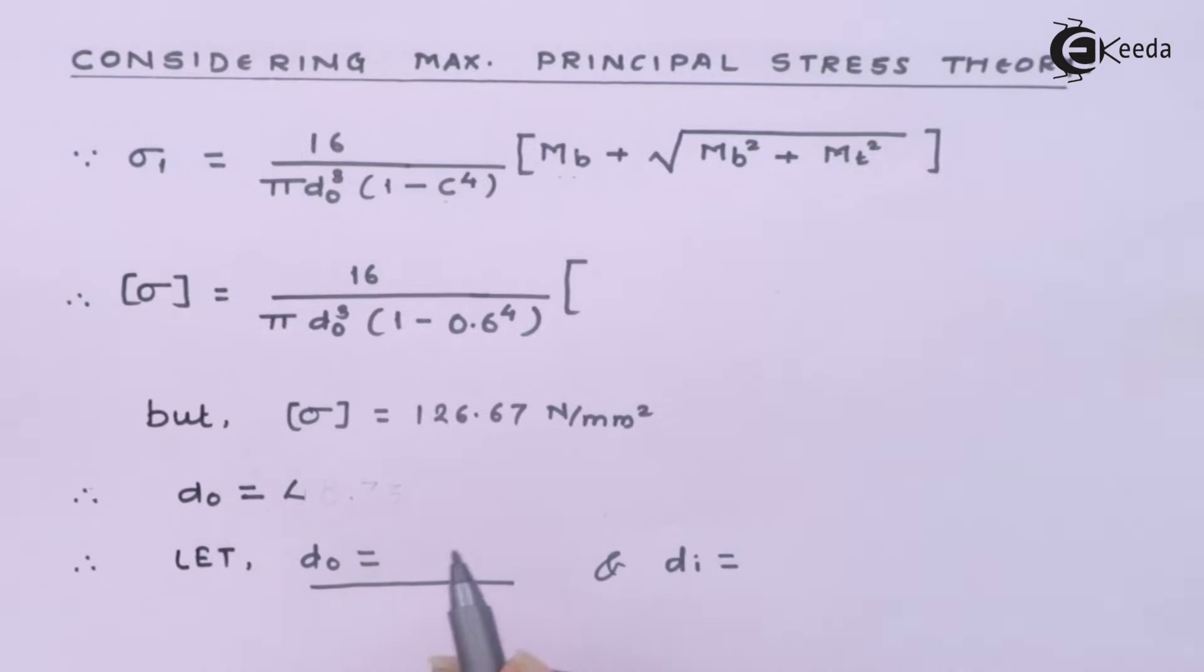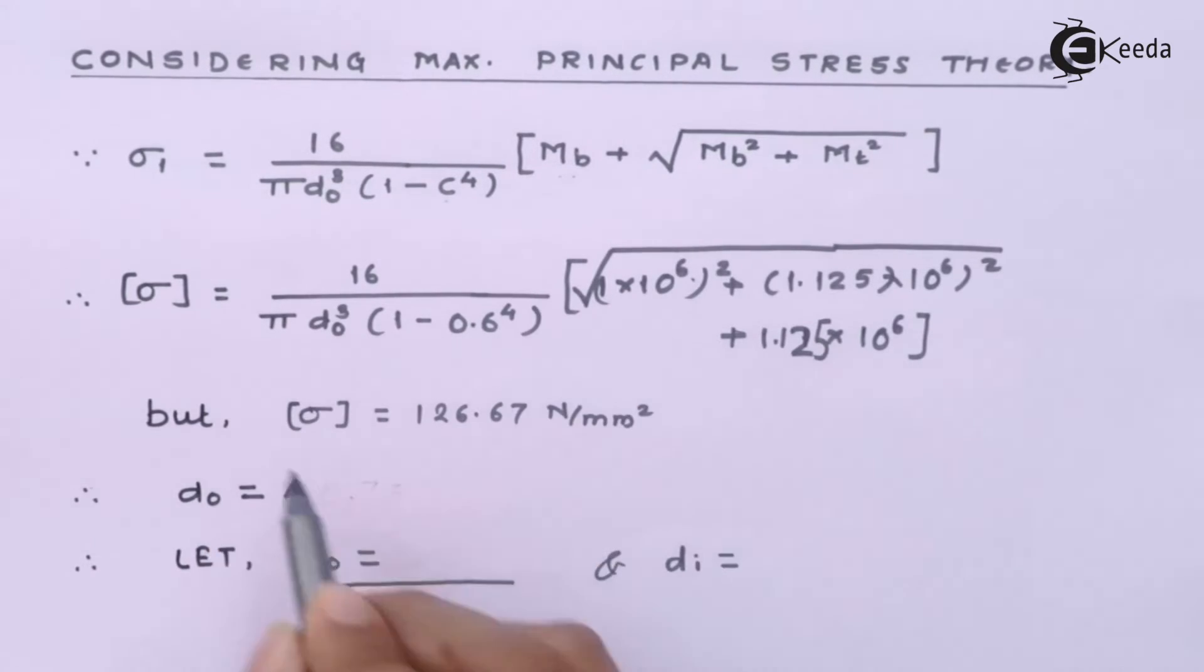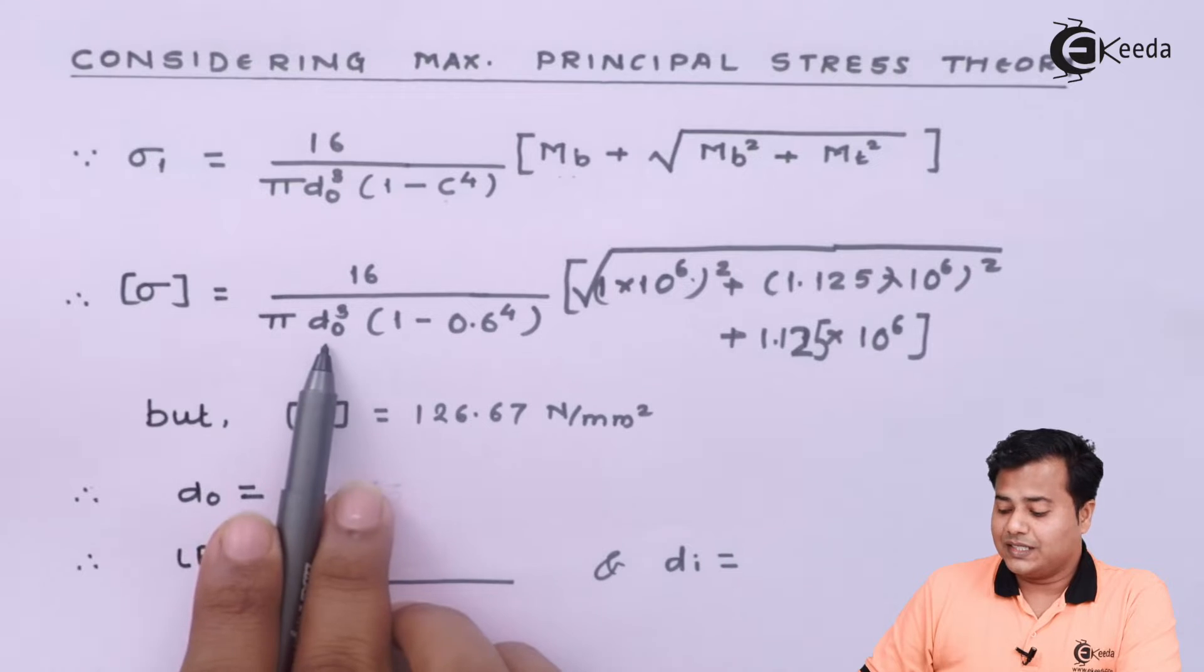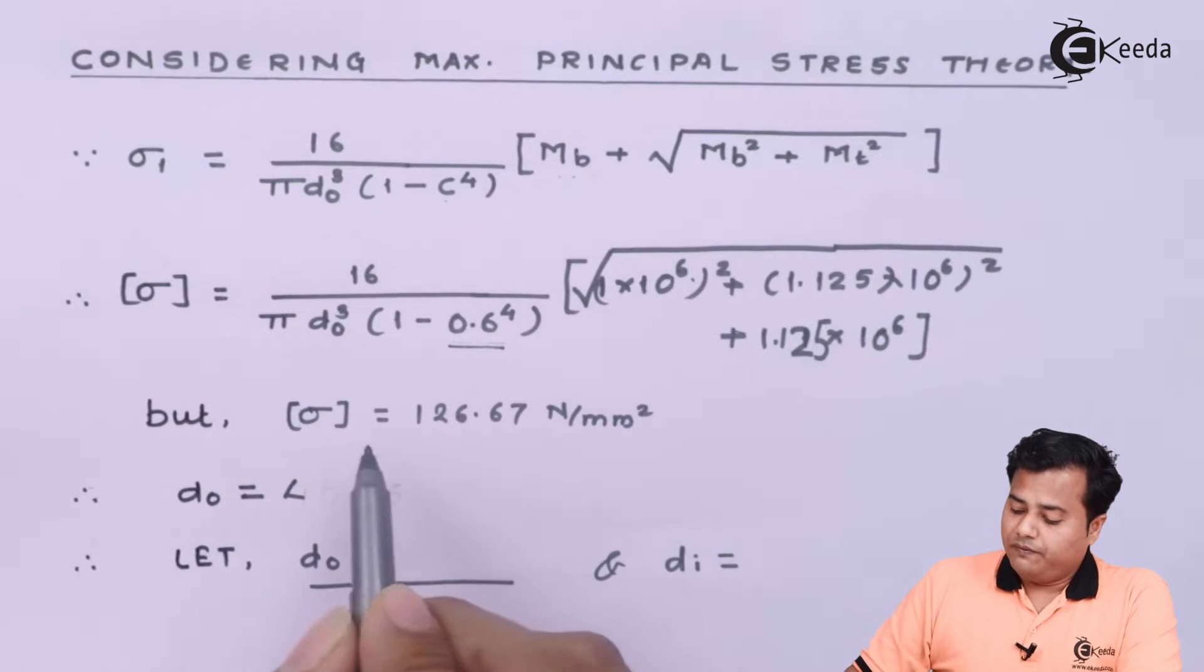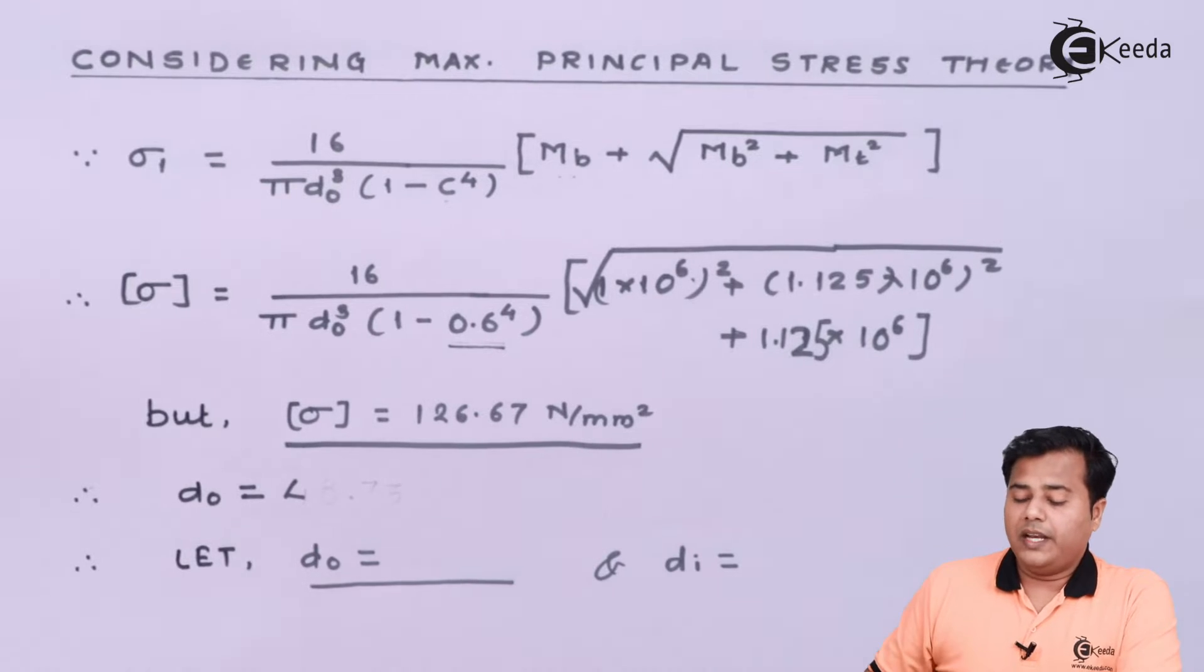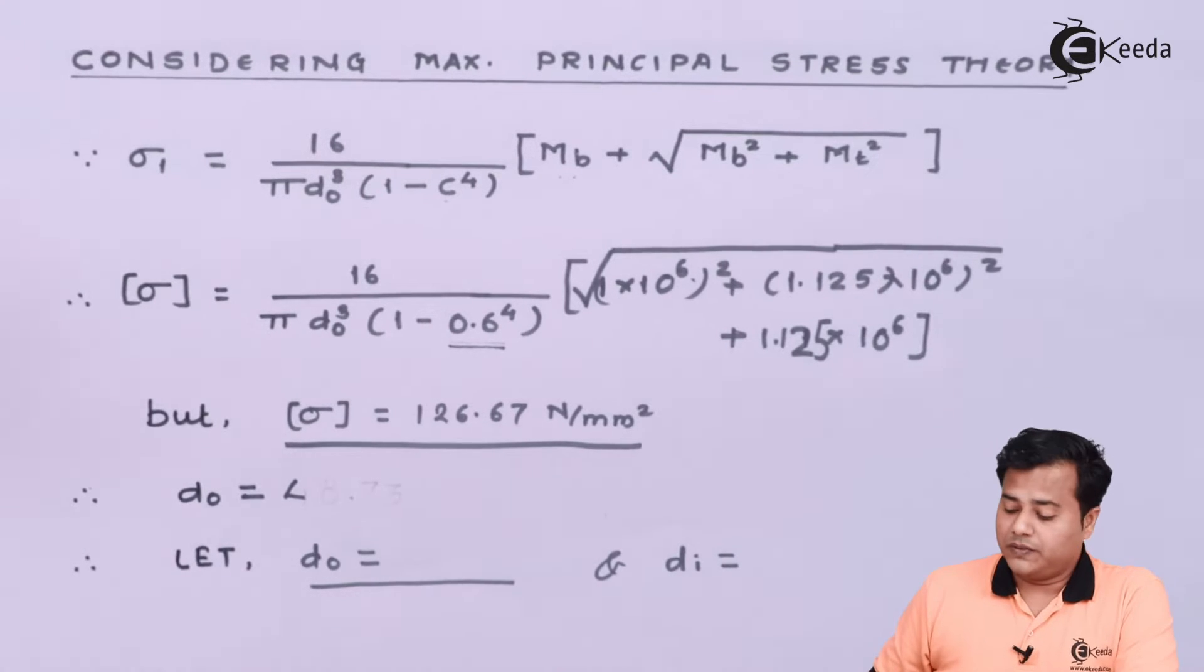So if I substitute the values of bending moment and others, if we solve this particular equation we have only one unknown with us, that is the outer diameter, because the c factor is already given. We know that the maximum allowable value of the normal stress or any strength is nothing but 126.67 considering factor of safety.